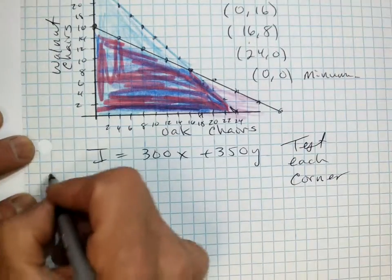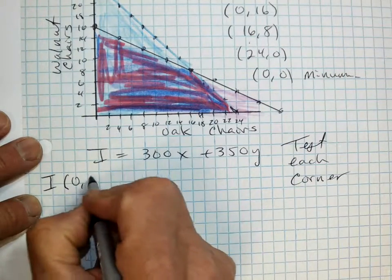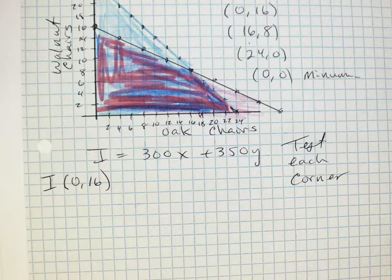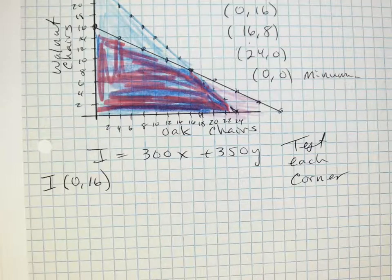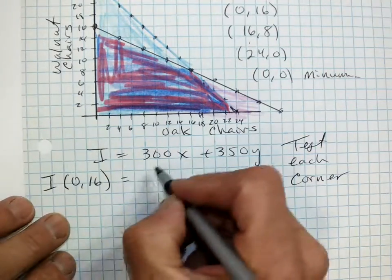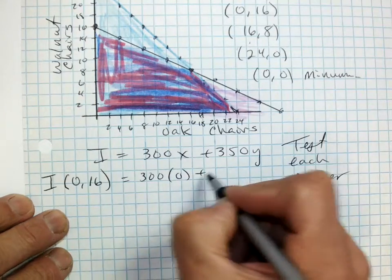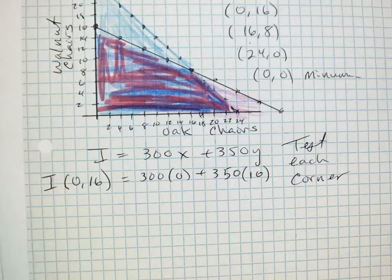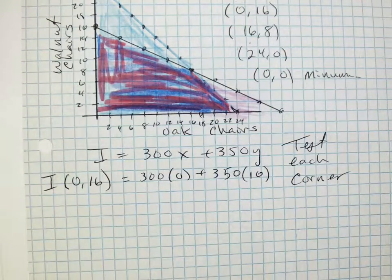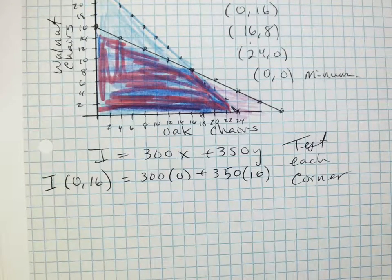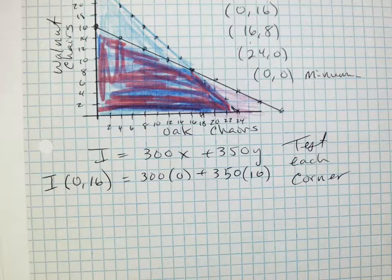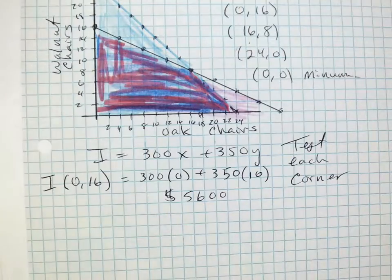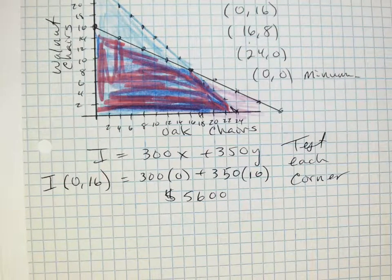First, let's go I of 0, 16. I of 0, 16 says, basically, plug 0 for the x, and plug 16 for the y. See how that works? I of 16 equals 300 times 0 plus 350 times 16. Let me check that out, use my calculator. Let's see, 350 times 16. So I get an income of $5,600. Not bad. I'm going to make some money, but is it the best? Let's test the other corner.